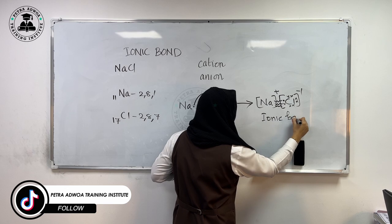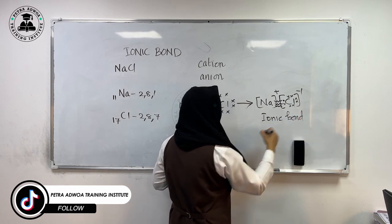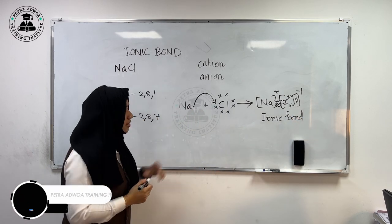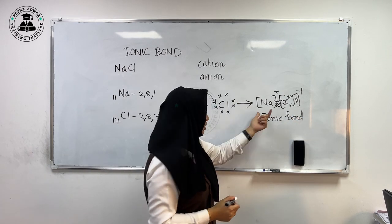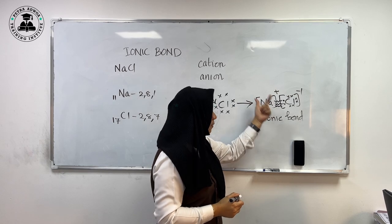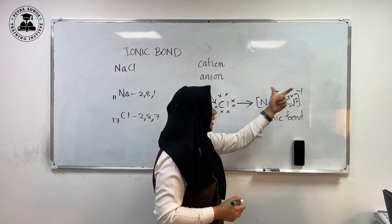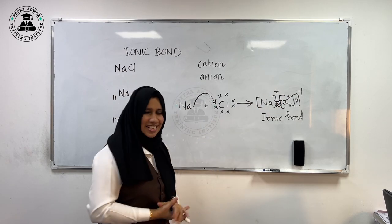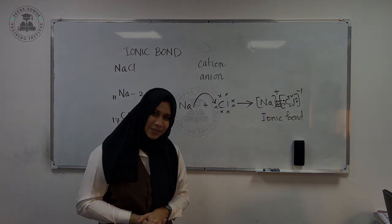I think the topic is clear. The ionic bond is a strong electrostatic force of attraction between a positive ion and a negative ion. And that's all. Thank you.